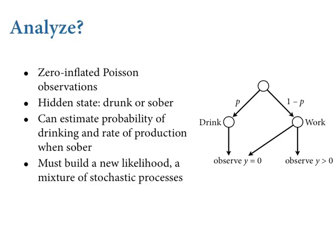We're going to construct a new likelihood function — a mixture likelihood with two stochastic processes. The first is binomial: are they partying or not? There's a chance p they party. Conditional on not partying, there's a Poisson process that generates completed manuscripts. What we observe is a mixture of those two things. You can imagine the monks have a wooden coin — on one side a big frothy stein, on the other a quill — and they flip it every morning. The question is: what's the weighting on this coin?